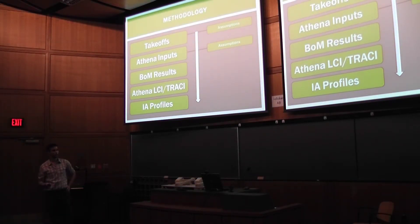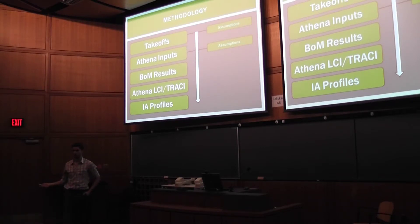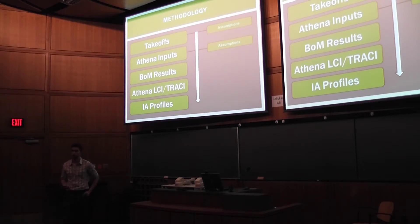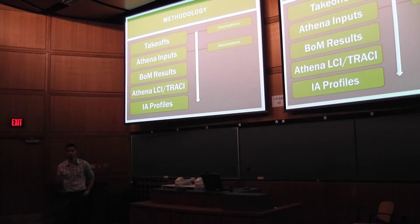We start off with the takeoffs, which we performed using software called On-Screen Takeoff. Rob taught us how to use it, and we received drawings from three different sources: the old Thunderbird drawings came from the UBC records department, the new building was provided by the architects Kasian Architects, and the oval was supplied by Canon Design with permission from the City of Richmond.